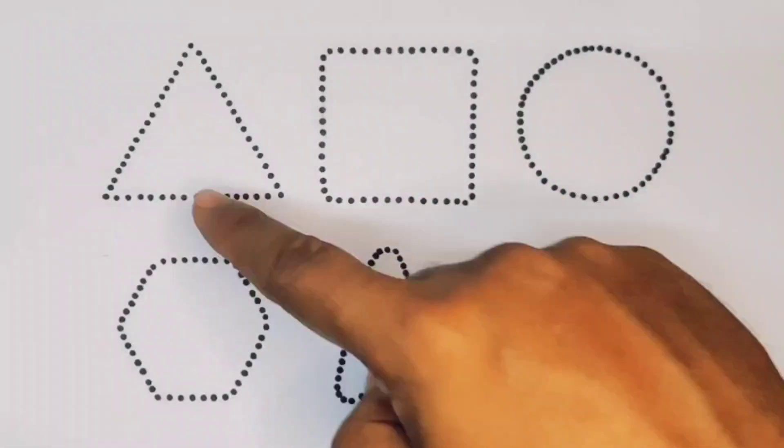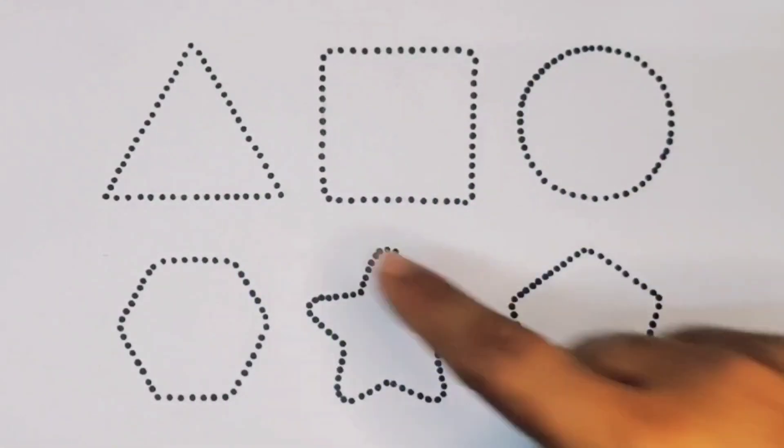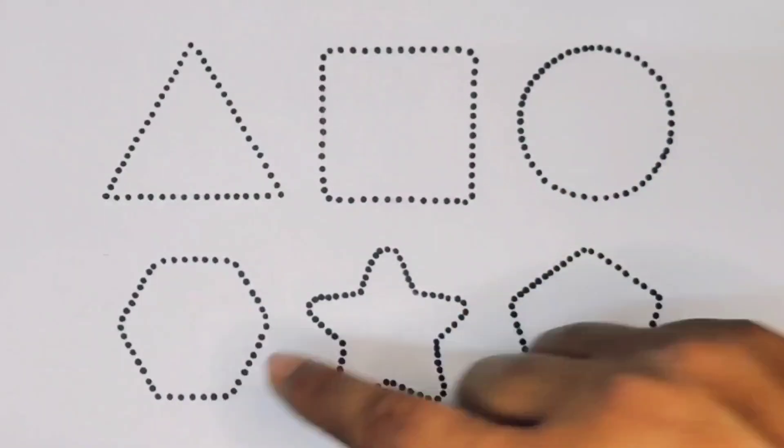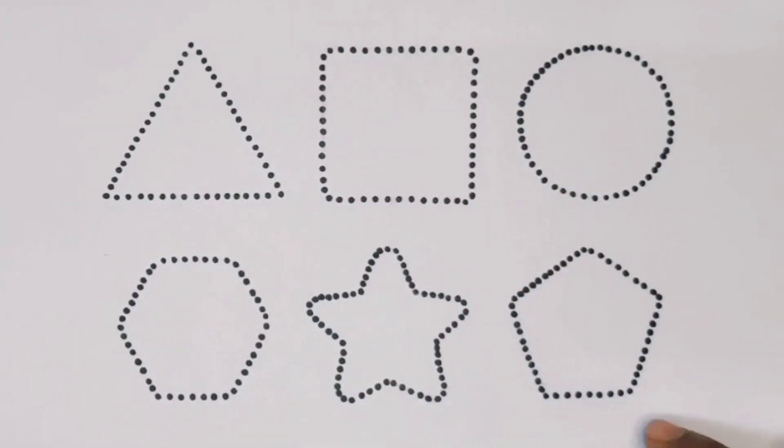Now let's learn the 2D shapes: triangle, square, circle, hexagon, star, and pentagon.